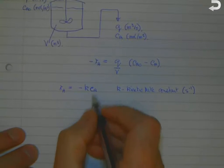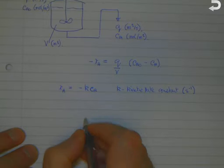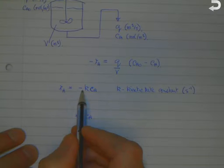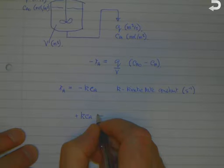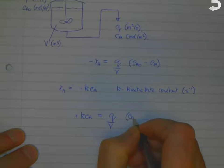All we need to do is substitute for rA in the top equation. We've got -rA, but rA is -kCA, so the two minus signs cancel out and we get +kCA = Q/V(CAo - CA).